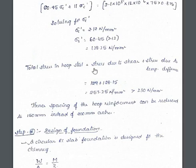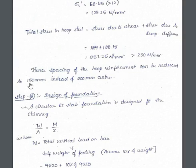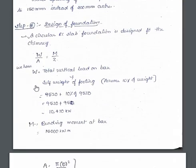The total stress in the hoop steel equals the stress due to shear plus the stress due to temperature difference. The stress due to shear was previously found as 128.15 N/mm². Adding the temperature stress of 128.25 N/mm² gives a total of 257.25 N/mm², which is greater than the permissible 230 N/mm². Therefore, we must strengthen the chimney by reducing the spacing between hoop reinforcement from 200 mm to 150 mm. The design of the foundation will be covered in the next part.